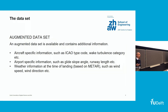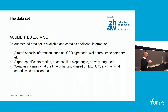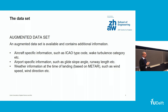That's the minimal dataset we publish. We also have an augmented dataset with additional information — aircraft-specific stuff like the ICAO type code and wake turbulence category, and airport-specific information such as glide slope angle, runway length, whether it has an intersection, plus metadata. They're all publicly available, but we put more information in there to help people get started a bit faster.